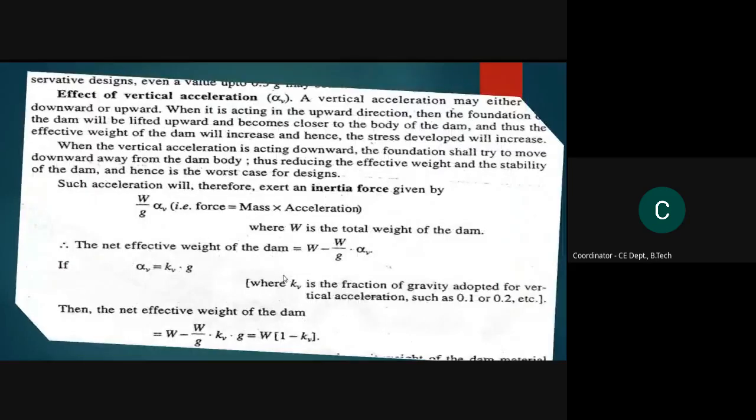For example, 0.1g to 0.15g is generally sufficient for high dam seismic zones. A value of 0.15g was used in Bhakra Dam design and 0.2g in Ramganga Dam. For extreme cases in Zone 5, alpha has been taken as 0.3g.